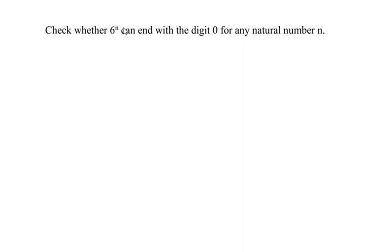We have to check that if we substitute the value of n as 1, 2, 3, 4, and so on—it could be any number—do we get a value of 6 raised to n as, for example, 60 or 120, some number which should be ending with a zero?